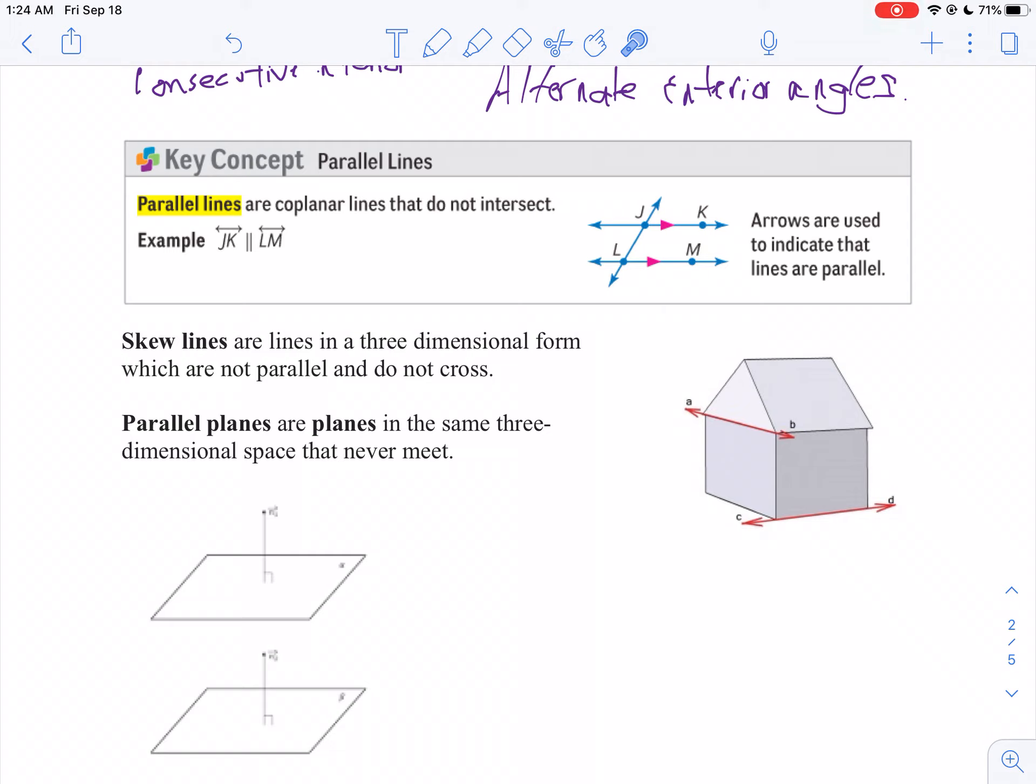If you have two lines that never intersect but aren't in the same plane, we call those skew lines. Notice line AB and line CD will never intersect because they're in different planes, but they're not the same distance apart.